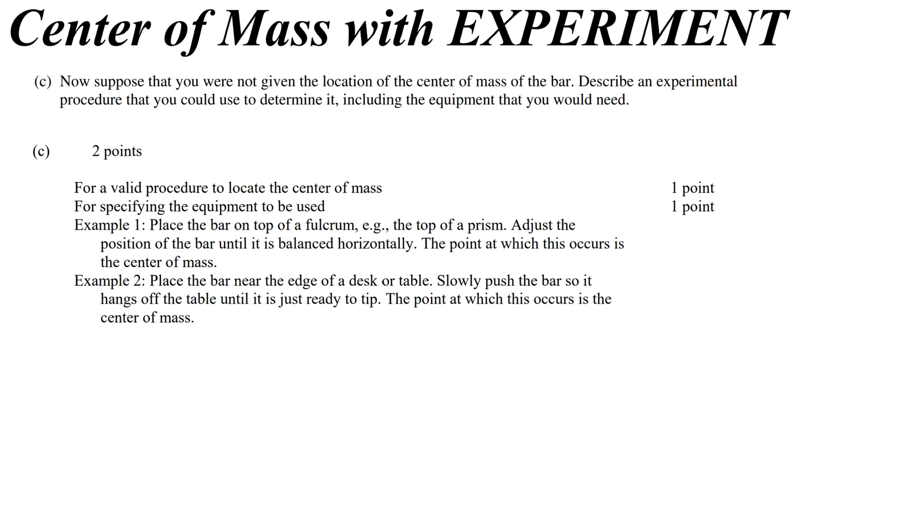Example one, place the bar on top of a fulcrum, i.e. the top of a prism. It's like a glass triangle. Adjust it till it's balanced. Example two, place the bar near the edge of a desk or table. Push it until it hangs off and is ready to tip. Really all you have to do is write something to get two points that says you balance it and use something to measure that. That something would be like a meter stick. That's it.